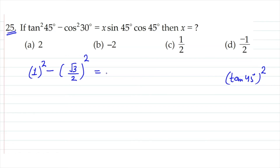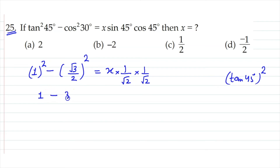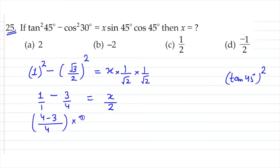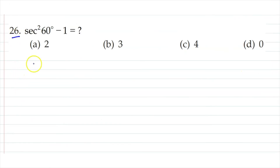Squaring both 1/√2 values gives 1/2. Taking LCM — 4 minus 3 gives 1. So x equals 1/2. The corresponding option is correct. Next question 26.